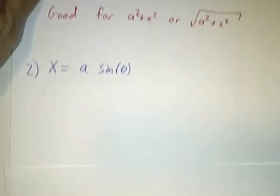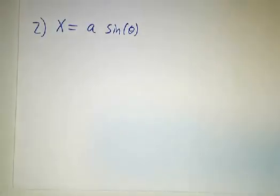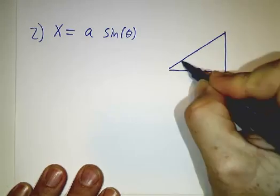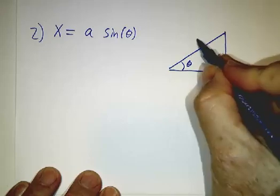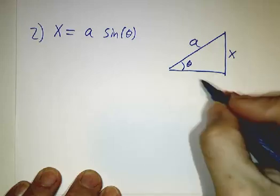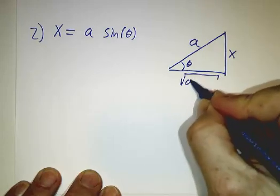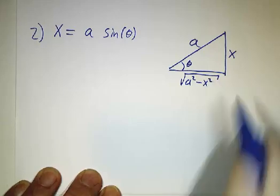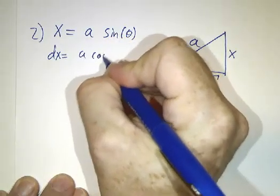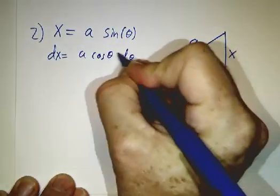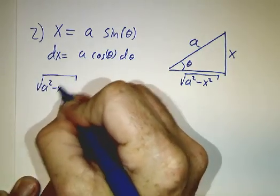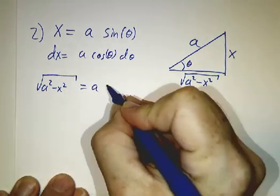The next kind of substitution that we like to do is x equals a sin theta. That also refers to a triangle, only now the sine is the opposite over the hypotenuse, so the opposite is x and the hypotenuse is a. And that makes the third side the square root of a squared minus x squared. Now we write dx equals a cos theta dθ. And if you write the square root of a squared minus x squared, well that's just going to be a cos theta.